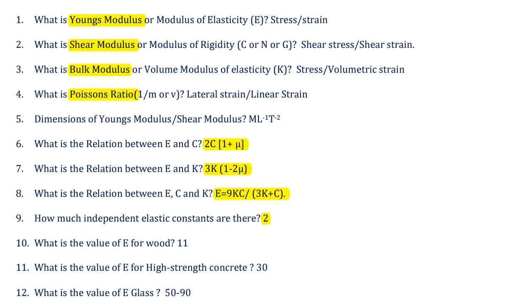Fourth question: what is Poisson ratio? Poisson ratio is nothing but the ratio of lateral strain to linear strain, and it is denoted by the symbol 1/M or Mu.